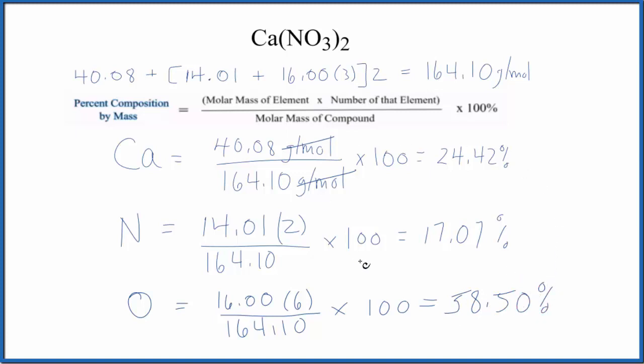If you add all these numbers up, they should be very close to 100. In this case, because I'm rounding to two decimal places, I'm a little bit off—about 0.01%. So it should be very close.